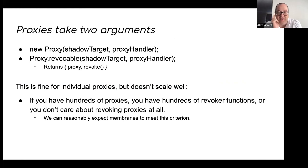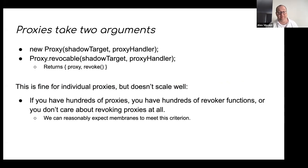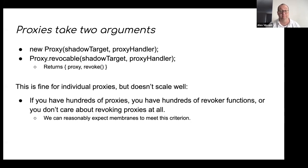If you have hundreds of proxies, this becomes a bit of a problem. When you're trying to revoke them, it's either hundreds of revoker functions or no revocation at all. That's a scalability problem — it's a bookkeeping problem.